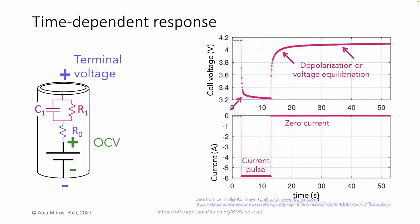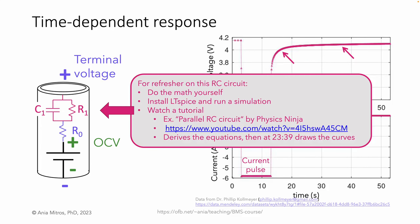We can model these time-dependent processes with a resistor in parallel with a capacitor. If the circuit is familiar to you, it may be obvious that the shape of the gradual relaxation in the plot matches the behavior of the parallel RC circuit. If you're rusty on RC circuits, either work through the math yourself, install LTSpice and run a simulation, or watch a tutorial — for example, Physics Ninja has a nice tutorial on YouTube entitled Parallel RC Circuit.